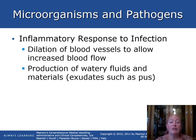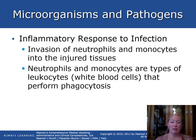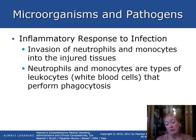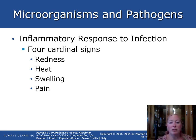The inflammatory response to infection includes dilation of blood vessels to allow increased blood flow, production of exudate such as pus, and invasion of neutrophils and monocytes to injured tissues. Neutrophils and monocytes are types of leukocytes, or white blood cells, that perform phagocytosis — the eating of bacteria or pathogens. The four cardinal signs of inflammation are redness, heat, swelling, and pain.